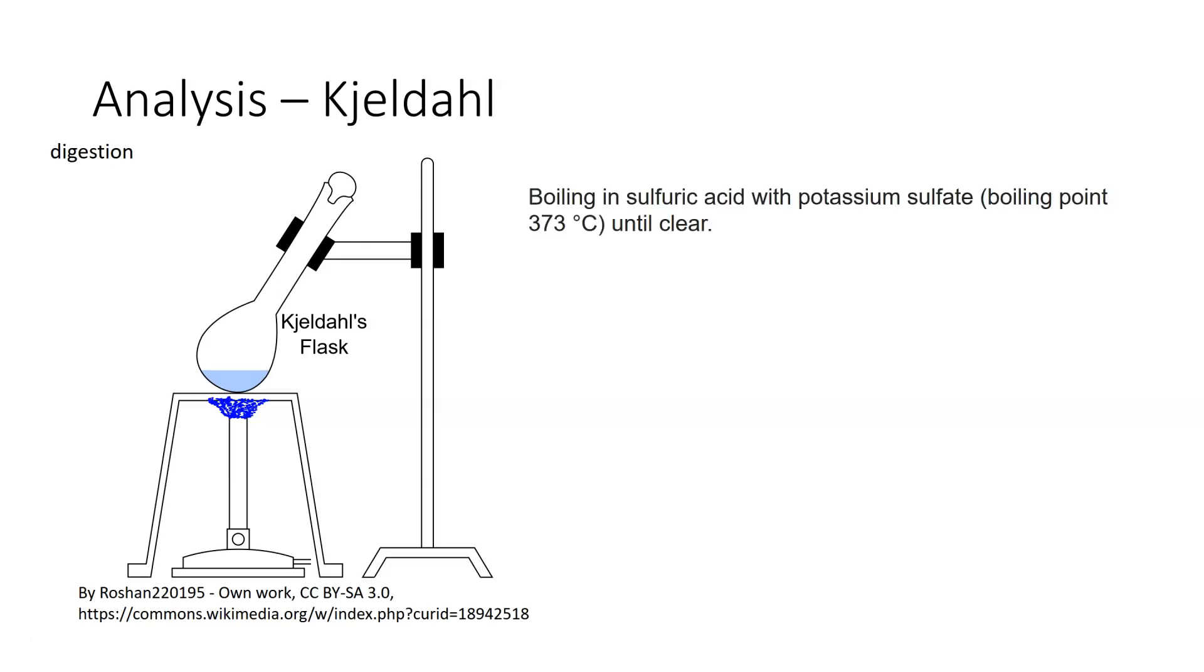You use boiling sulfuric acid with potassium sulfate which will have a boiling point of 373 degrees Celsius until the material is clear or totally digested. Your reaction is the sample plus the hydrogen sulfide gives you ammonium sulfate which is aqueous plus carbon dioxide plus sulfur dioxide plus water.